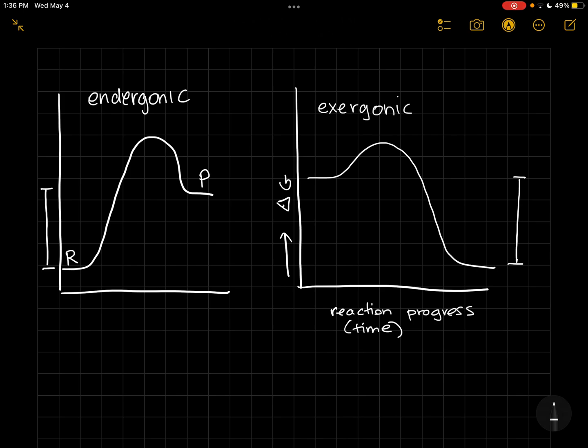So we're releasing energy in this case. If we're just thinking about this from the perspective of the reaction, then this one's going to be negative delta G for the reaction. And this one's going to be positive delta G just for the reaction because it requires Gibbs free energy.